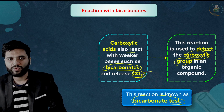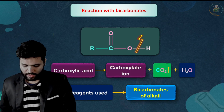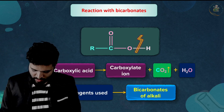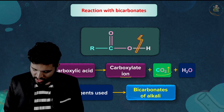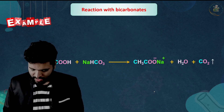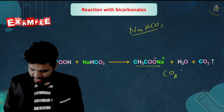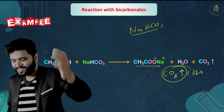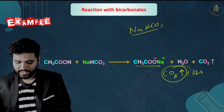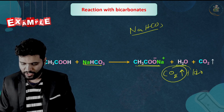This reaction is also known as the bicarbonate test. The bicarbonate test is used to detect the carboxylic group present in an organic compound, because carboxylic acid can react with the weak base sodium bicarbonate (NaHCO3) to produce a carboxylate salt, H2O, and CO2 gas.